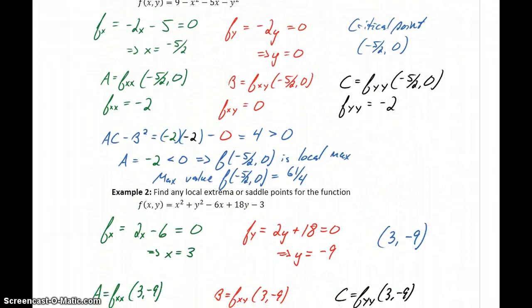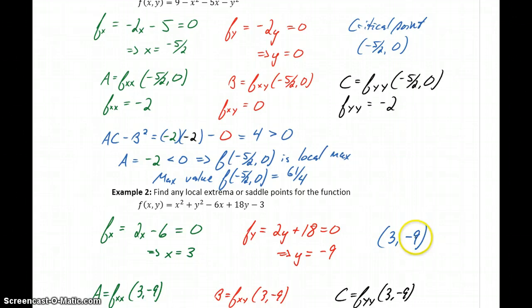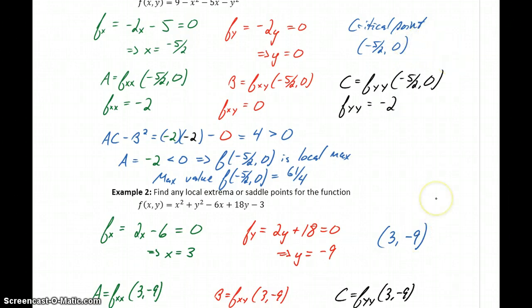In these first two examples, we only came up with one critical point for each function to consider, meaning we'll have at most one maximum, one minimum, or one saddle point. In other problems, if we end up with multiple critical points to evaluate, then we might have two maximums, or a maximum and a minimum. We always need to keep in mind the case of saddle points — even though we find a critical point, it could turn out that the point isn't a maximum or a minimum.